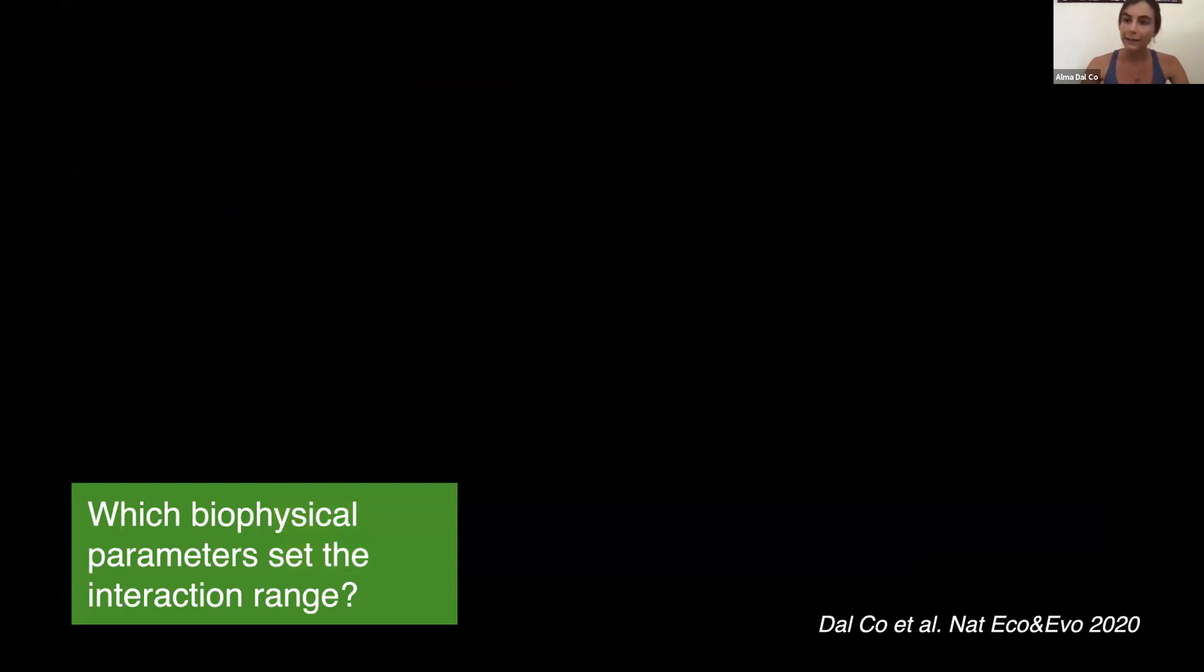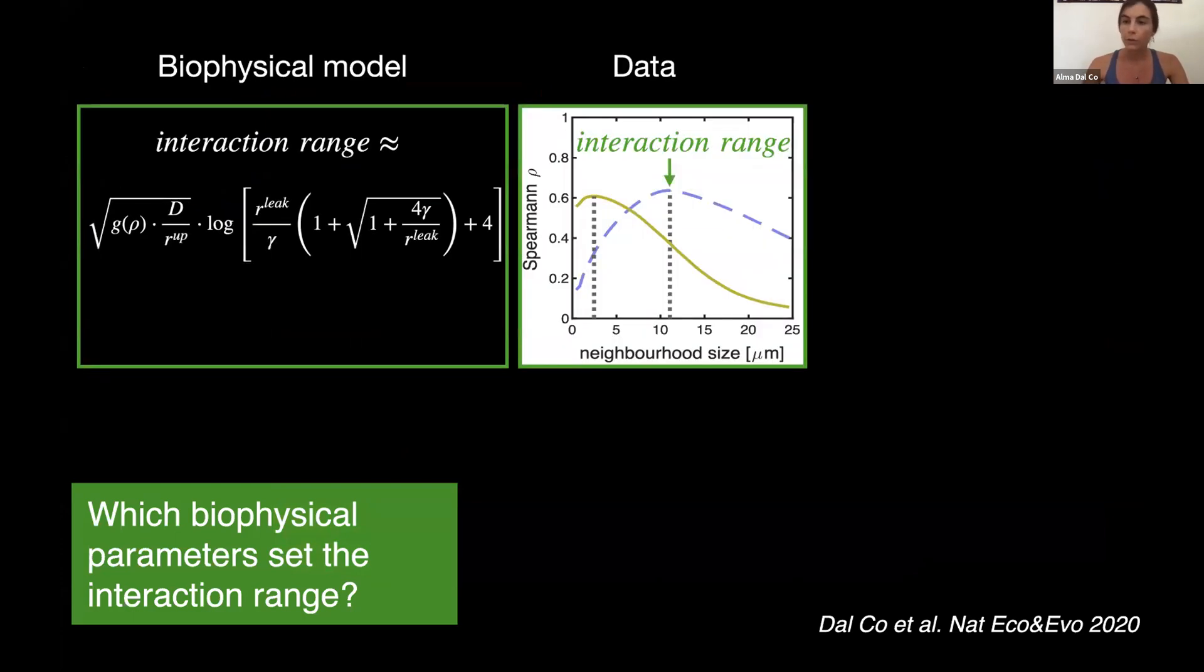Now our model allows us also to generalize beyond our specific microbial community. And in general, it allows us to ask the question, which biophysical parameters set the interaction range? So through analytical calculations, we can show that the interaction range mostly depends on the uptake rates of amino acids. In fact, we can see that there is a very weak dependence on the leakage rate of the exchange amino acids, while there's a stronger dependence on the uptake rate of these amino acids.